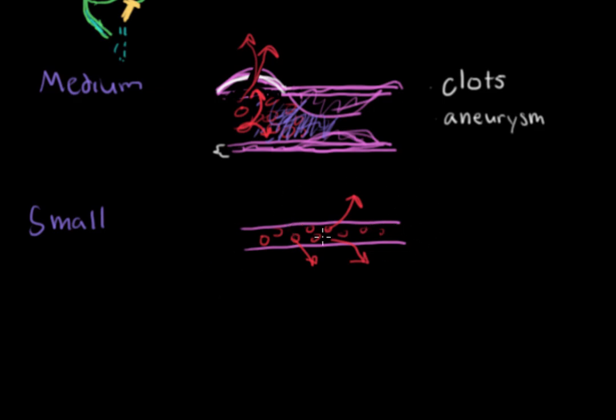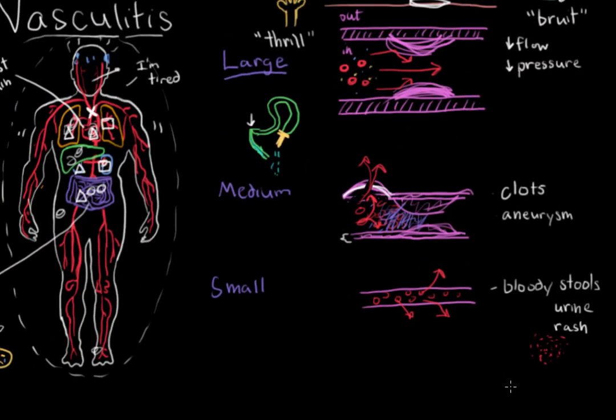And depending on where the blood vessel is, that's where you might see symptoms. So for example, if the small blood vessels are in the intestines, you might see bloody stool. If the blood vessels are in the kidneys, you might see bloody urine. If the blood vessels are just under the skin, you might actually see a rash that kind of gives a dotted pattern where all these different small little blood vessels have ruptured.